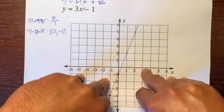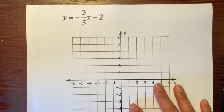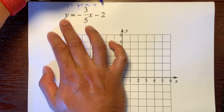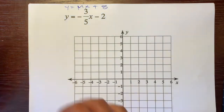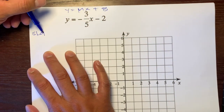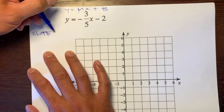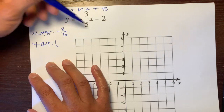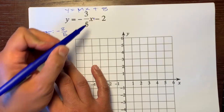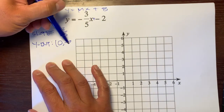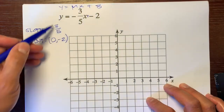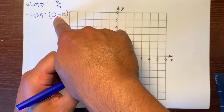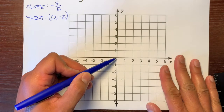Let's show another example: Y equals negative 3 fifths X minus 2. Just to remind us, Y equals MX plus B. Let's identify our slope — it's already a fraction: negative 3 over 5. And our Y-intercept, written as a coordinate pair, is (0, negative 2). This will be our starting point.